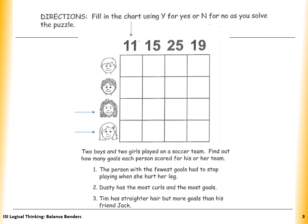Dusty has the most goals. So we are talking about Dusty with the most goals, which is number 25. So we put Y over here and fill the other row and column with N's.